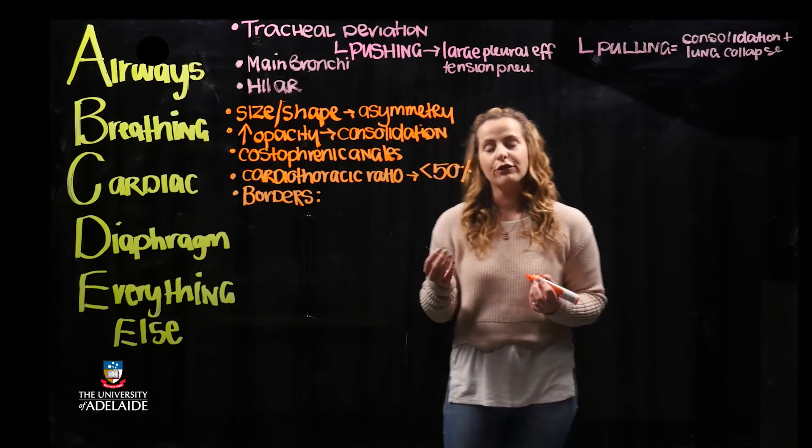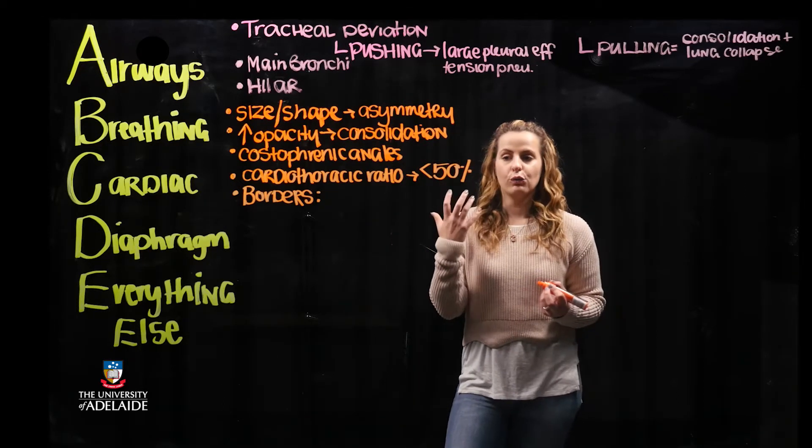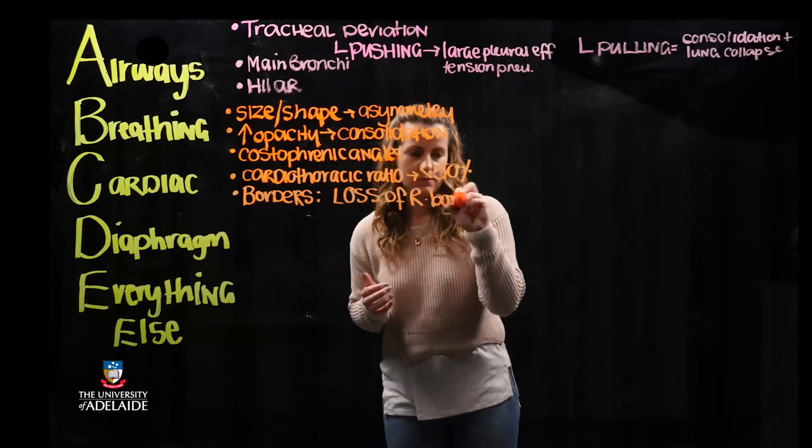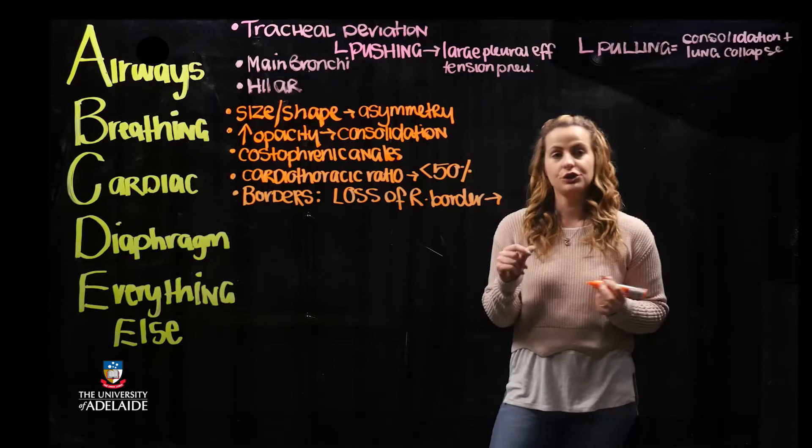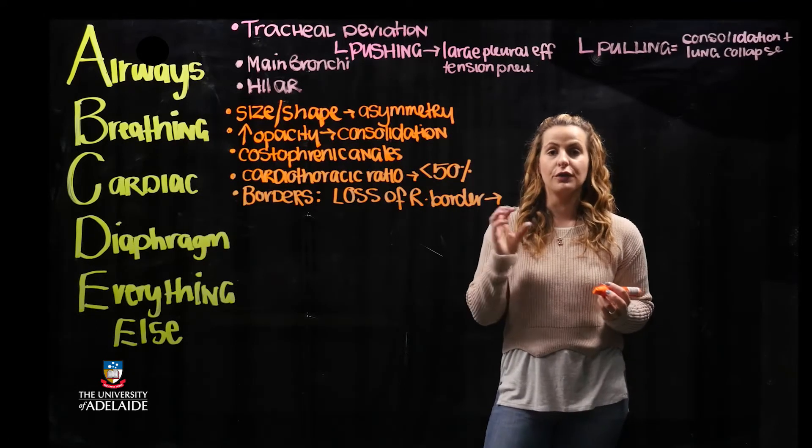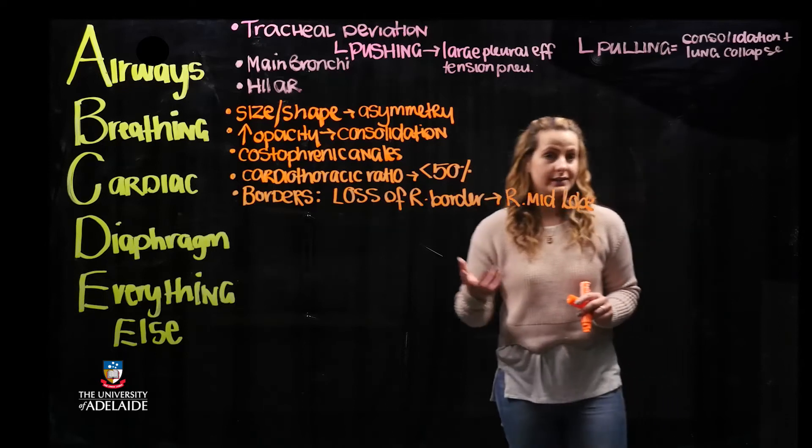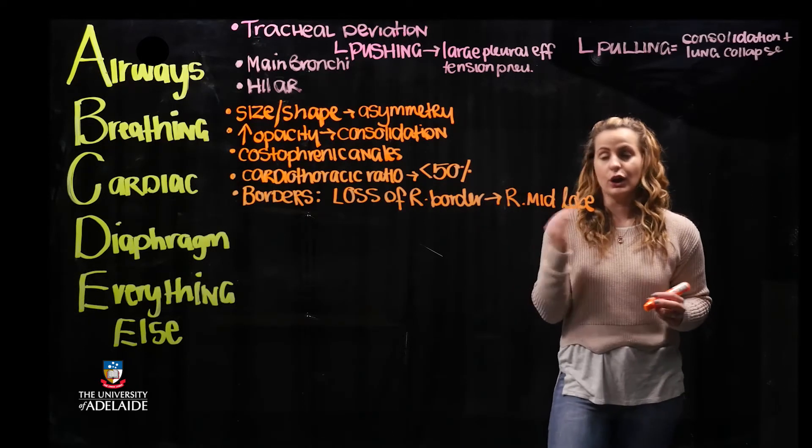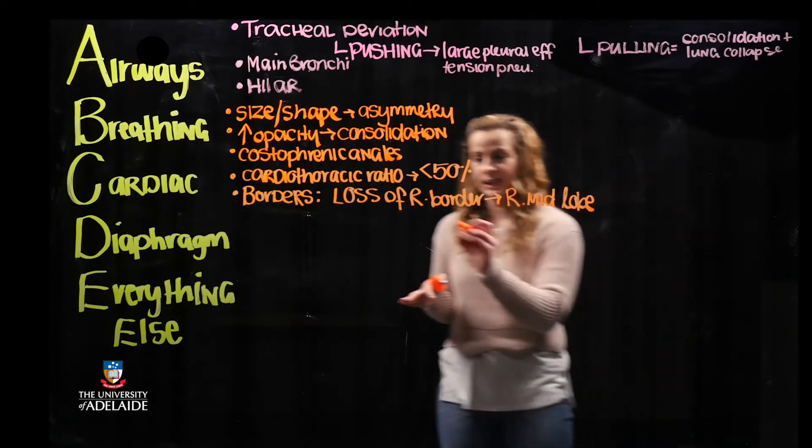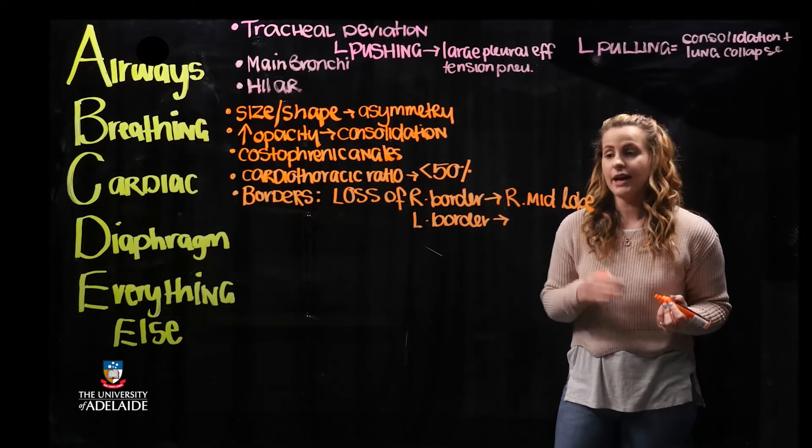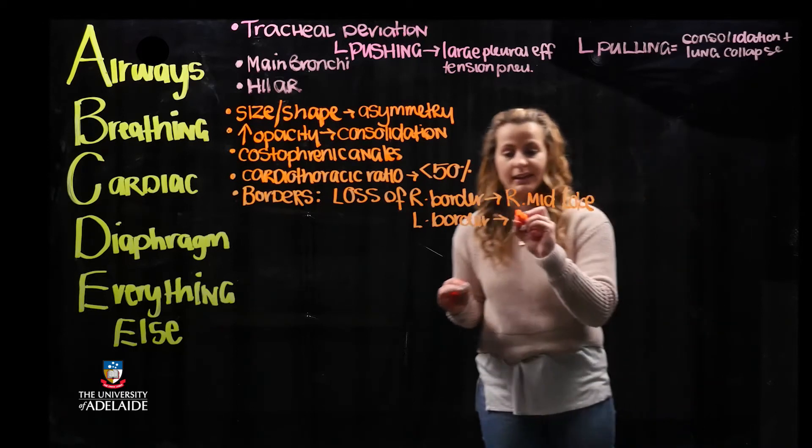For example, if you lose the right border of the heart on the X-ray, this is associated with collapse of the right middle lobe. Conversely, if we see a loss of the left border of the heart, this indicates we have a left upper lobe collapse.